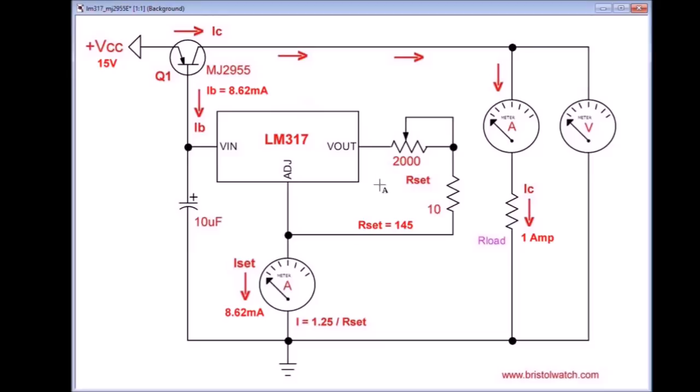At any rate, nonetheless, what you will find here is the current through the LM317 is set by R set, which is a combination of these two resistors. Your formula is 1.25 divided by R set.